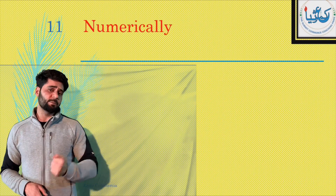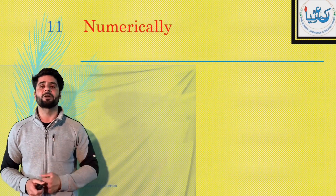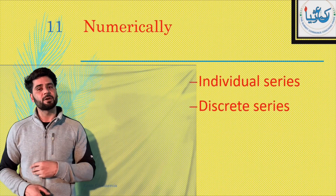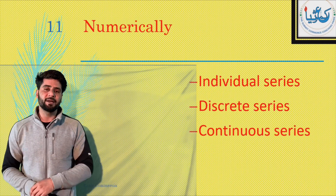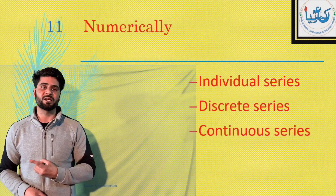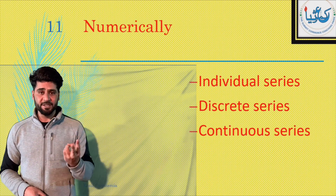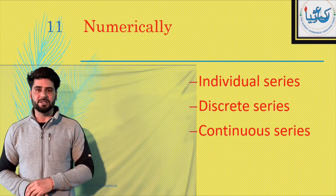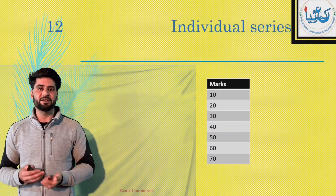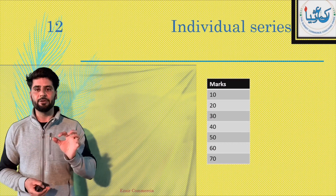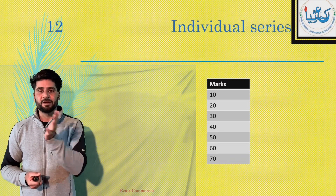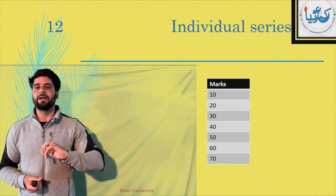Numerically, teen tarah ki series hoti hai. Jab bhi aapke paas questions aayenge statistics mein, teen tarah ke questions aayenge. Pehla individual series, doosra discrete series, aur teesra continuous series. Individual series is just simple — ek hi information di hogi: 10, 20, 30, 40, 50, 70. Ek marks diya hai variable — it's called individual. Akela hai, so ye individual series hai. There can be wages as well: wages 10, 20, 30, 40 — ek hi column hoga, toh ise kehte hai individual series.